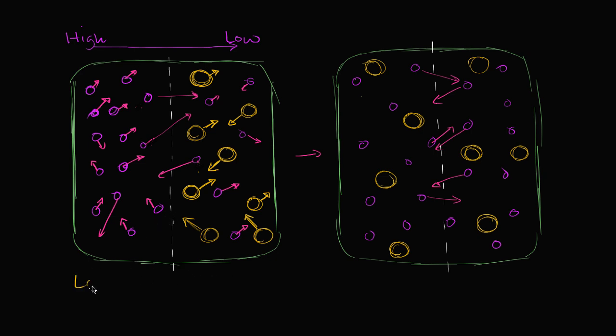So we have a low concentration, in fact we have none of the yellow particles on the left-hand side, and we have a high concentration on the right-hand side.